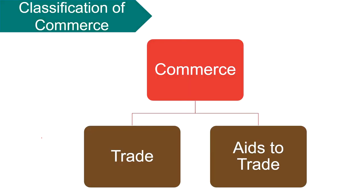Coming to the classification of commerce: commerce is classified into two main categories, that is trade and aids to trade. Trade means buying or acquiring goods and services with the purpose of selling them at a profit. It aims at making goods and services available to people who need them and are able and willing to pay for them.